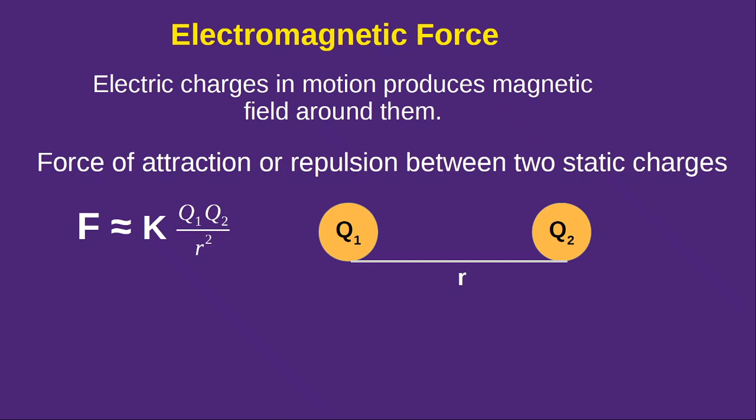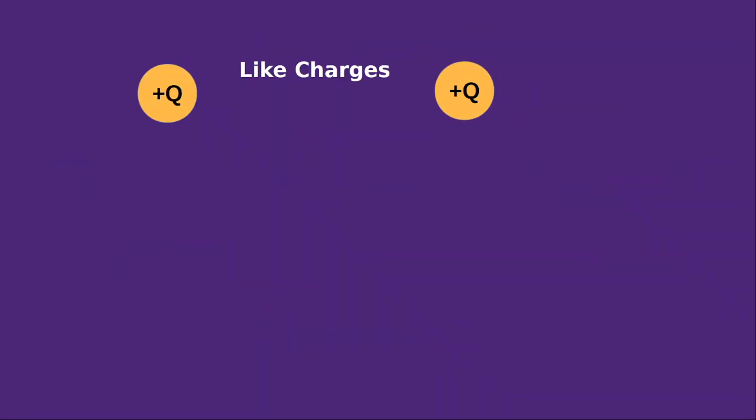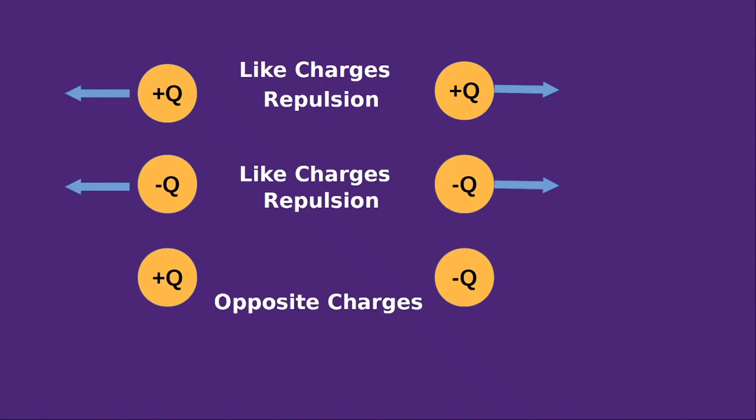Here the masses are replaced by the charges and the constant k is a medium dependent. That is the value of k depends on the medium in which the charges q1 and q2 are kept. And you will get to know more details about this force in your class 12. The nature of the force for two like charges is repulsive and for two unlike charges it is attractive.